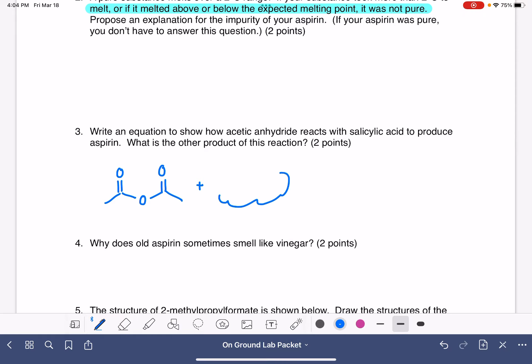Then draw the structure of salicylic acid and the structure of aspirin. You can look these up in your textbook, your notes, or Google them. The question also asks for the other product. What is the structure of the other product of this reaction?